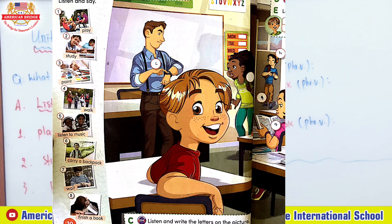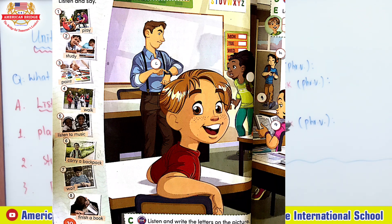Walk means to move or go somewhere by putting one foot in front of the other on the ground. Listen to music is a phrasal verb meaning to play recorded songs for enjoyment. Carry a backpack is a phrasal verb meaning to wear a special bag that is worn on the back — I think you also have a backpack. Wait functions as a verb meaning to stay where you are or delay doing something until somebody or something comes or something happens.